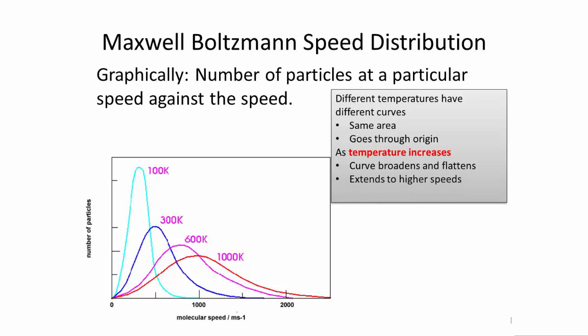Also it extends to higher speeds. And you find that as the temperature increases, the average kinetic energy increases too. For example, you can see that when we have 1000 Kelvin, the average molecular speed is 1000 meters per second. When you have a temperature between 100 and 300 Kelvin, this is closer to 500 meters per second.